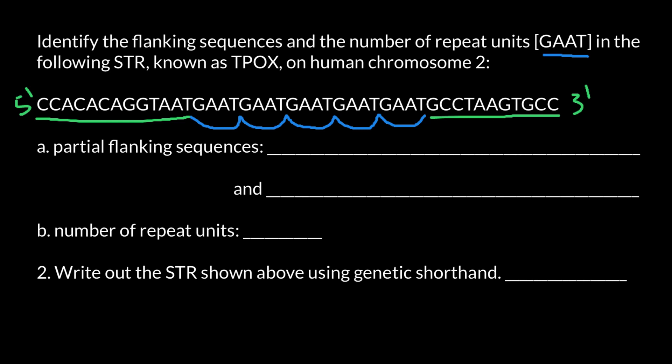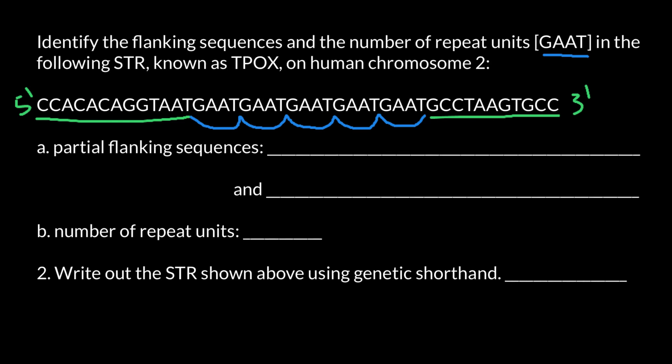These regions that we call flanking regions are used in order to make primers. It's not necessary that primers would be the same length as the flanking region. Here can be one attachment site for a primer, and here can be another one. When we design primers, the new sequence always grows from 5' end to 3' end.